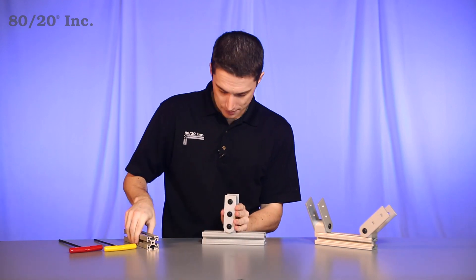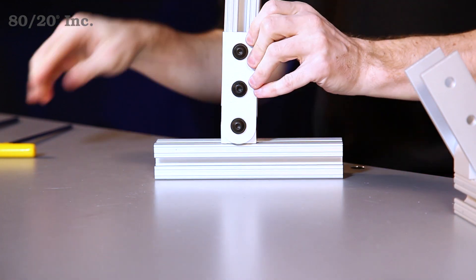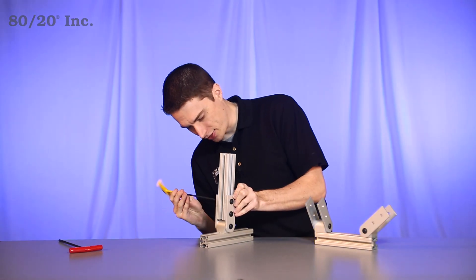From there, we're ready for our next bar. We'll slide it right onto the arms of the Structural Pivot. We'll take our wrench and tighten down that hardware.